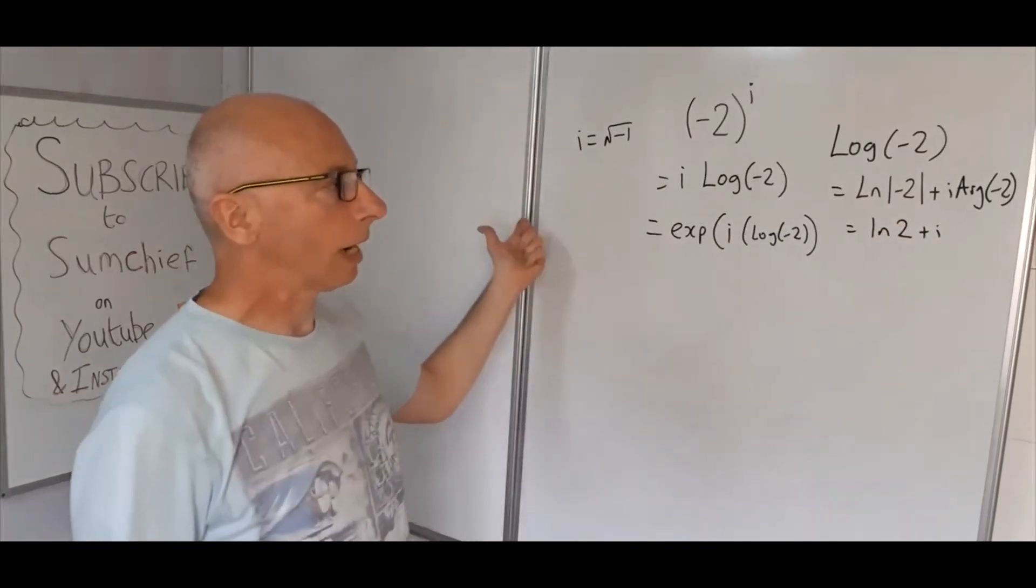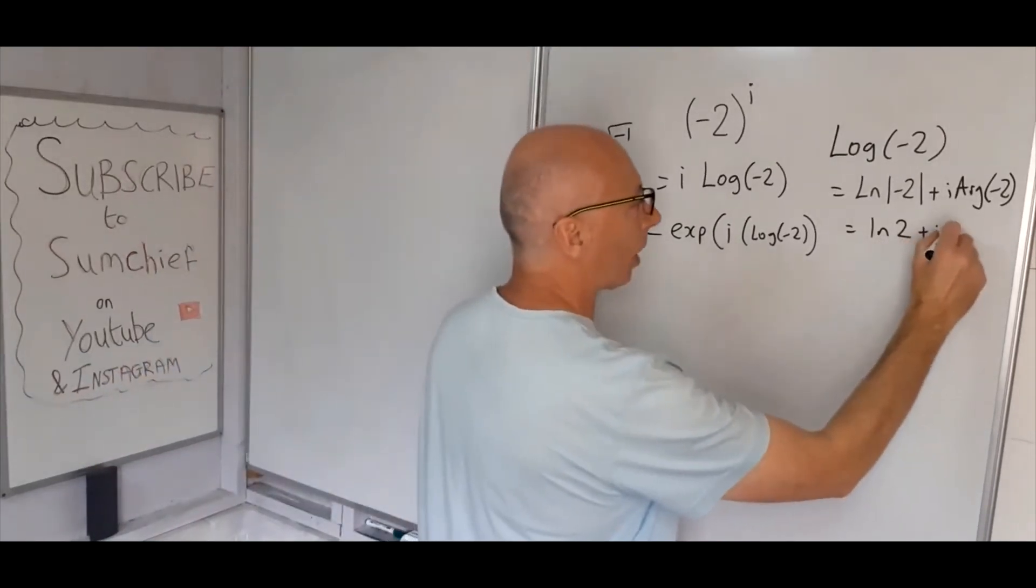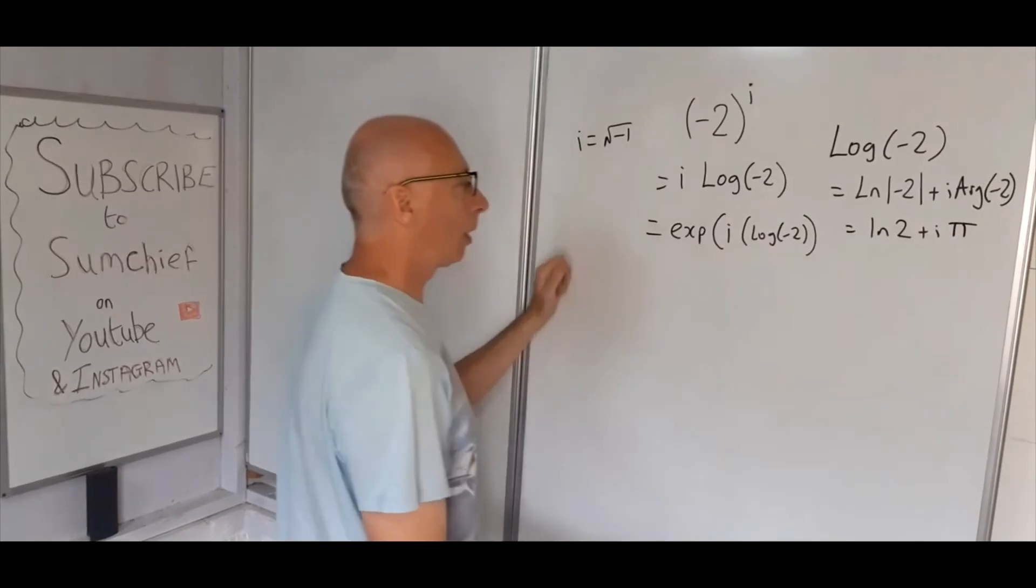Argument of minus two is out on the negative side of the real axis, so that's just pi. So basically ln two plus i pi.